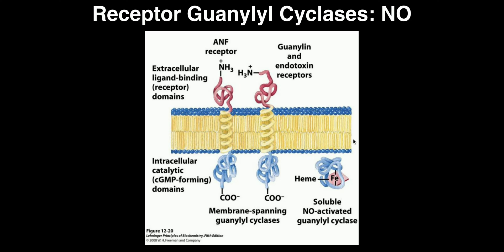Before we go into the pathway, let's discuss the two types of receptor guanylyl cyclases. The first is a membrane or transmembrane guanylyl cyclase. It has extracellular domains that bind a particular protein — probably the most important example being atrial natriuretic factor peptide, or ANF, a hormone released by the atria of the heart that decreases blood volume to lower blood pressure. It binds on this extracellular domain, and the cytosolic domain is where the catalytic part converts GTP into cyclic GMP.